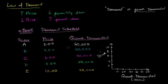So let's plot the scenarios. Scenario A, price is $2, 60,000 units are demanded. That is scenario A right over there. Scenario B, when the price is $4, 40,000 units are demanded. $4, 40,000 units, that's right over there. That's scenario B. Scenario C, $6, 30,000 units. That's right over there. Scenario D, $8, 25,000 units. That's right about there. That looks like $25,000 right in between. That right over there is scenario D.